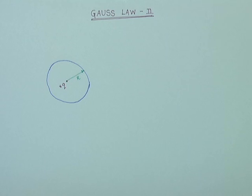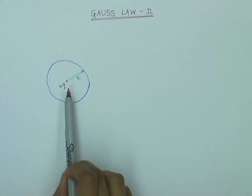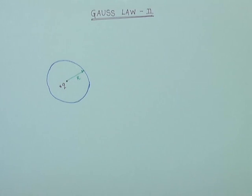In the previous video, we saw that if there is no net charge enclosed within a closed surface, the net flux over the surface is zero. Now let us see what happens if there is some net charge inside a closed surface and we figure out what the net flux over that surface is.